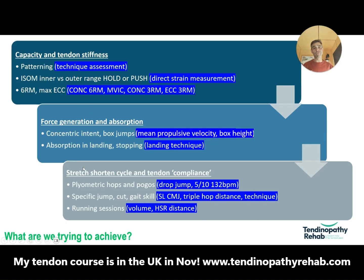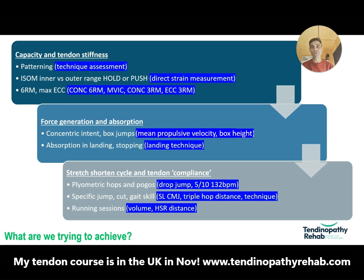The last thing we're trying to do — now that we've developed confidence, the ability to produce force quickly, and the ability to move, land, and absorb forces through the required ranges of motion — is express stretch-shorten cycle. We want to develop the ability of the tendon to store elastic energy and behave like an engine, but better than an engine because it doesn't need to be fueled — it's all passive energy into the tendon expressing that, allowing us to be more powerful.